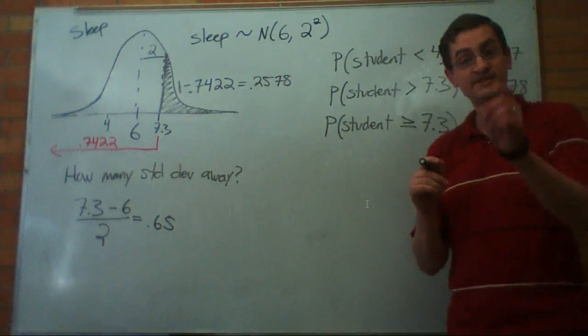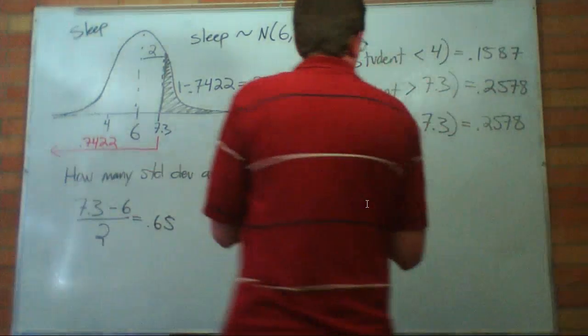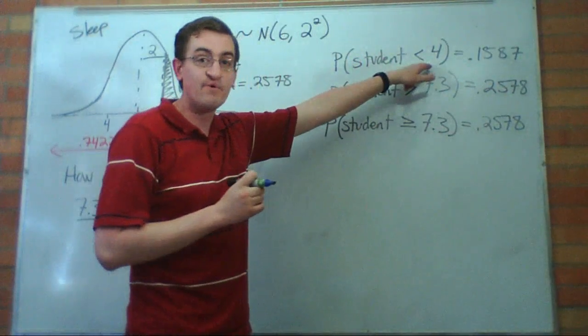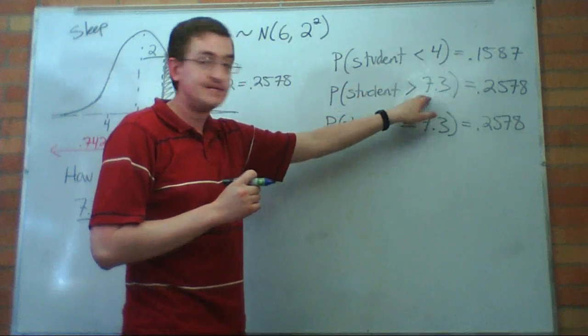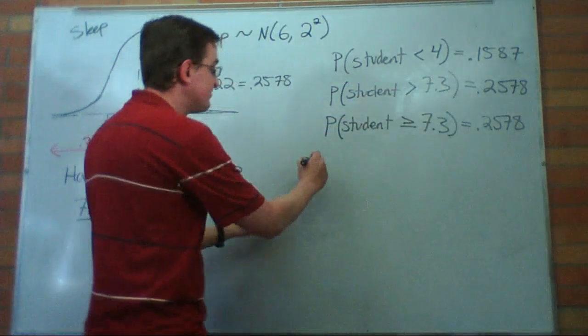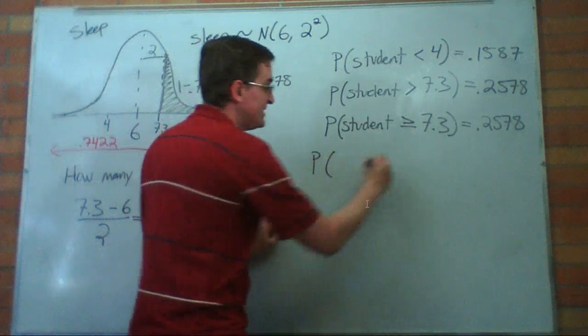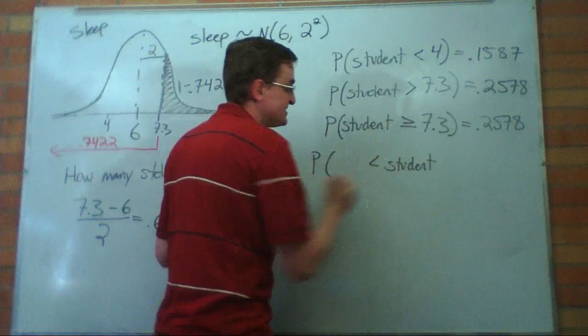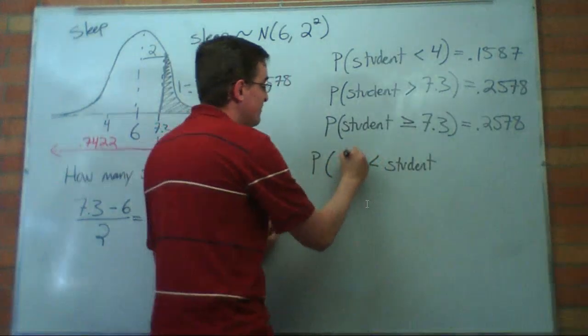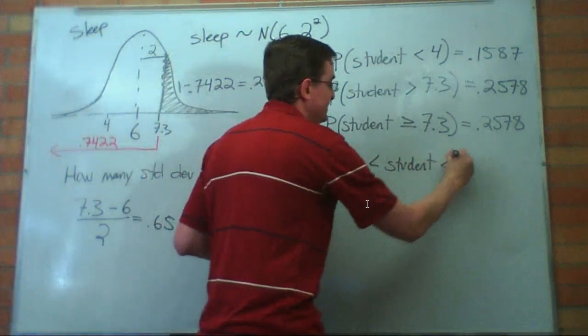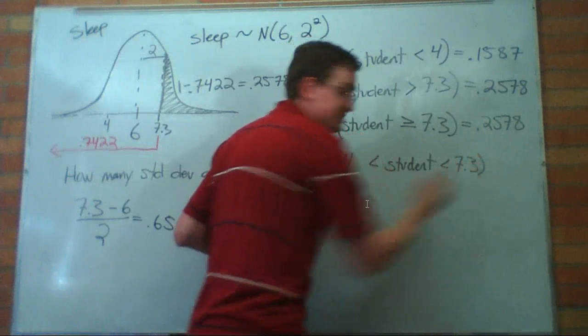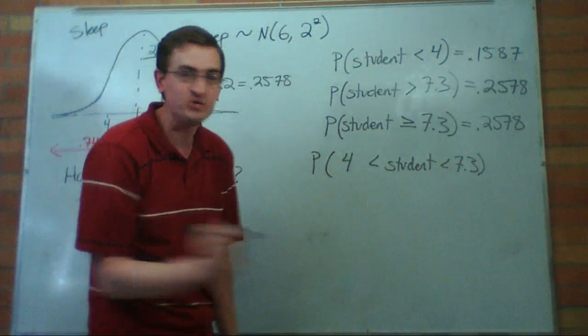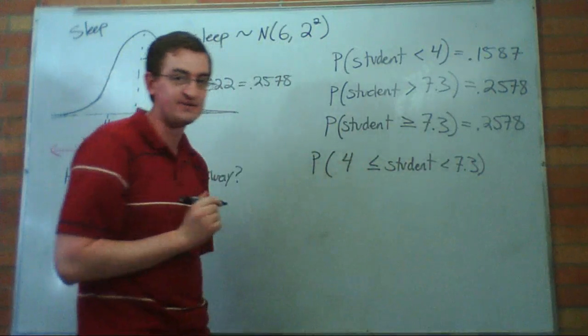Now, let's ask a different question. We've looked at the probability of getting 4 hours of sleep or less, 7.3 hours of sleep or more. Now I want to say, what's the probability that if I randomly select a student, they're going to get between 4 hours and 7.3 hours of sleep? And just to make it trickier, I'm going to put an equal sign under there.